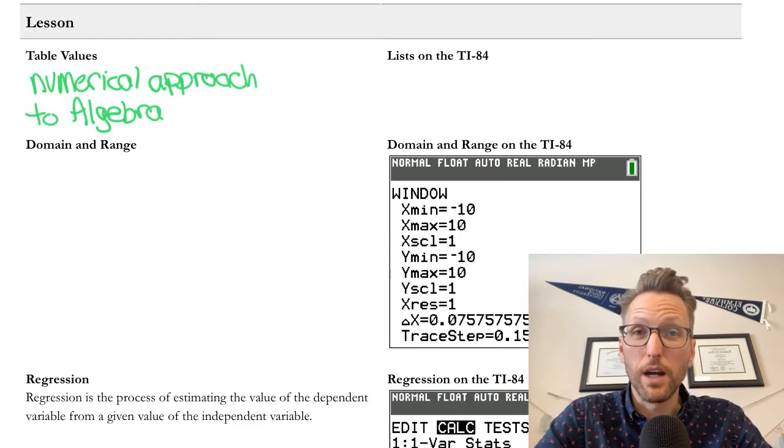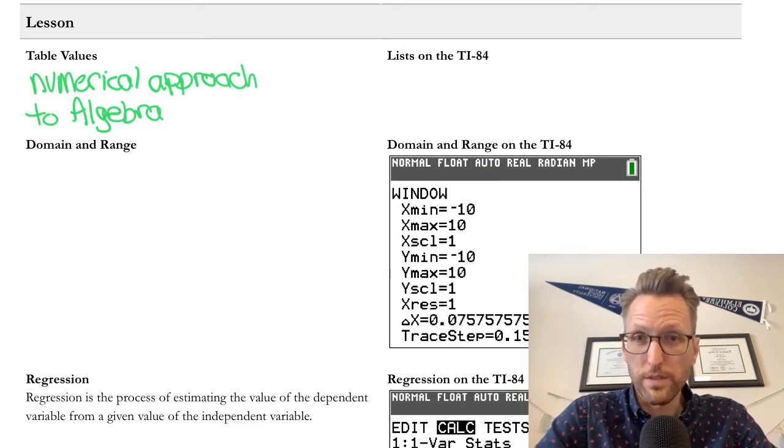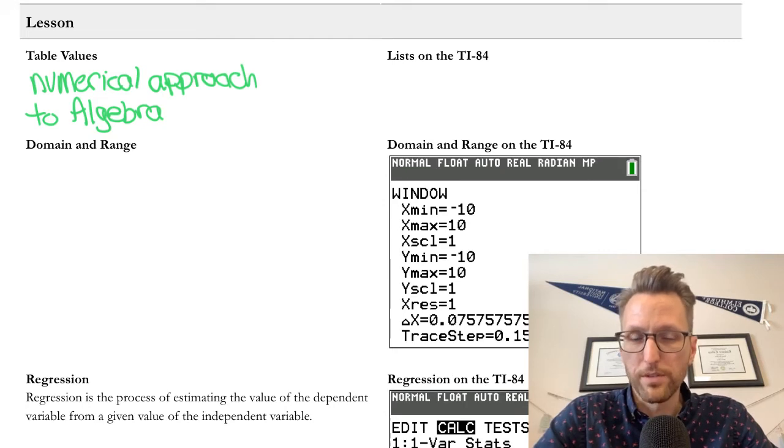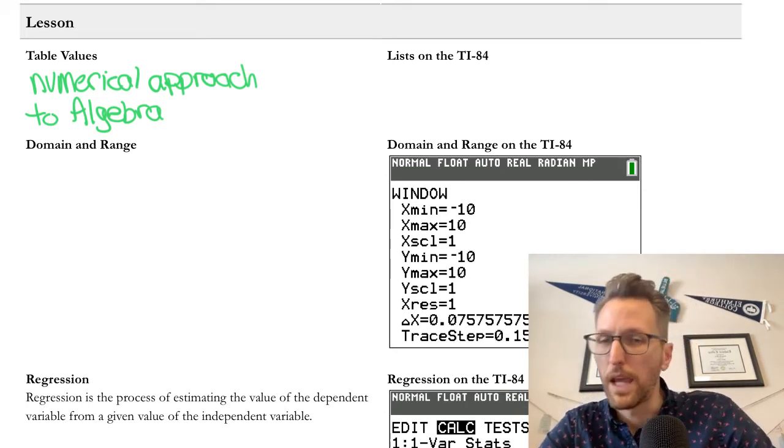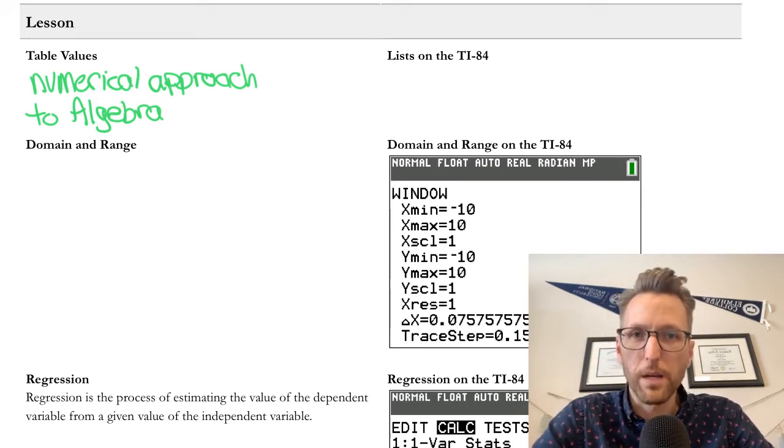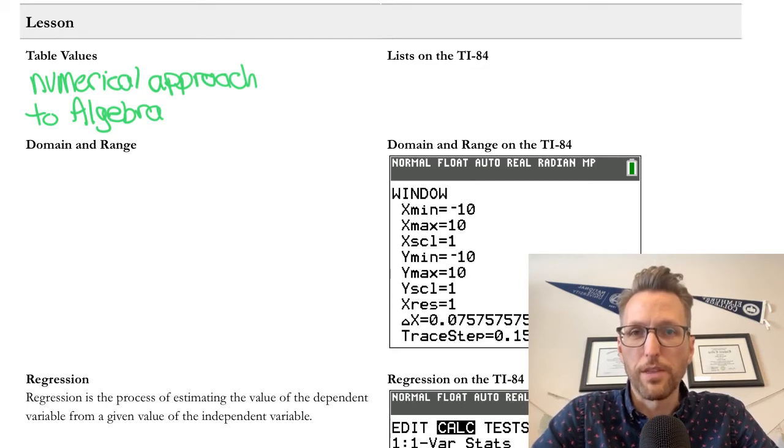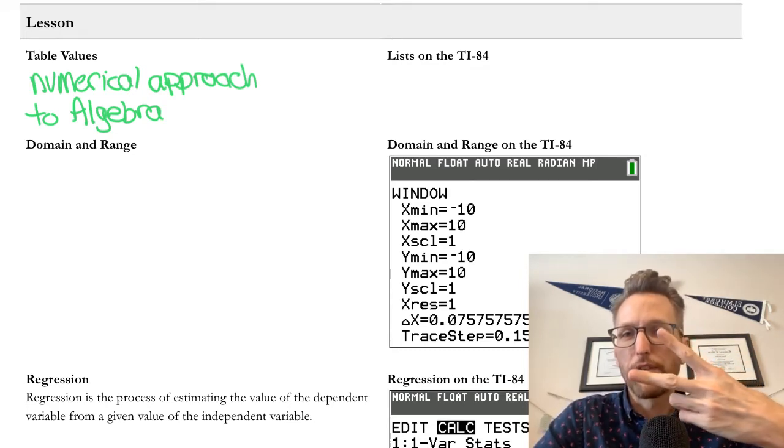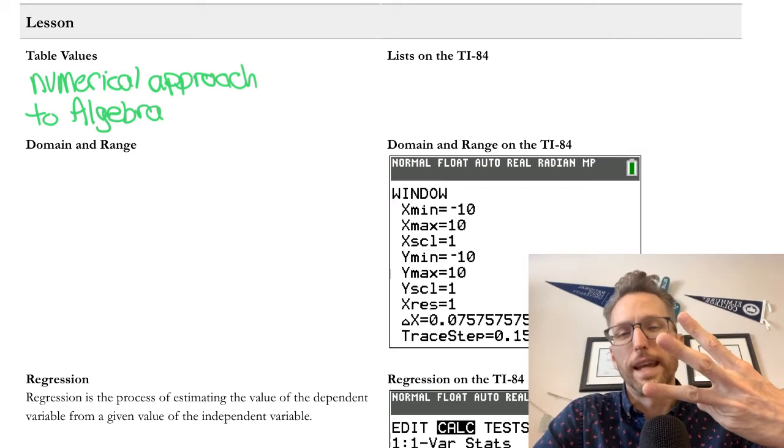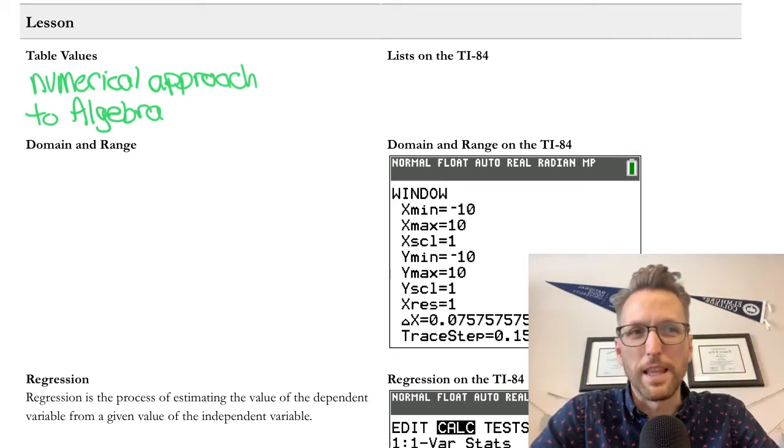The other approaches include a graphical approach, which is some sort of visual, either of an equation or of numbers. And an algebraic approach, an analytical approach, which is the same as a formulaic approach. So what's the equation that we're working with? So numerical, graphical, and analytical are the three best ways to say that.